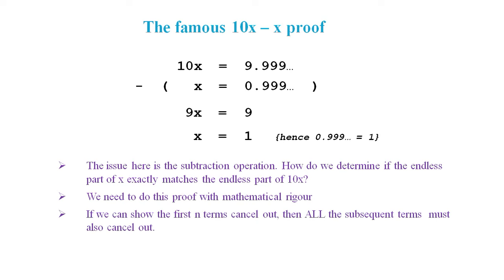In a rigorous approach, we would show that the first n terms cancel each other out, then all subsequent terms can be deemed to cancel out, and we will have a rigorous proof that 0.9 recurring equals 1.